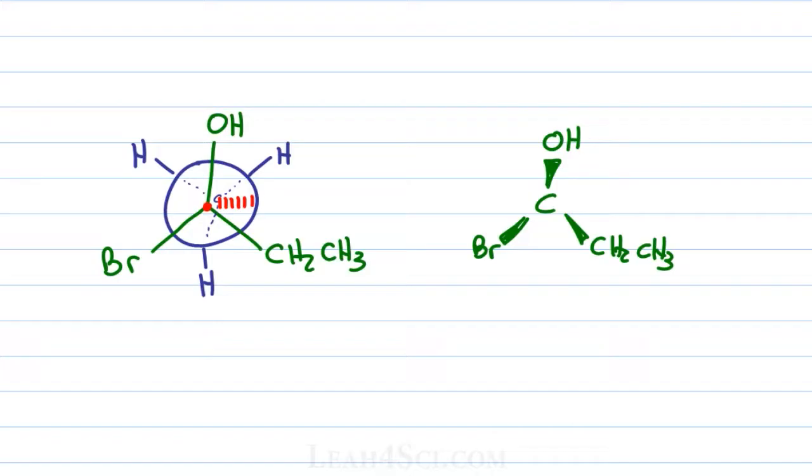So when you see this and you know priority number 4 in this case is in the back, just draw dashes to show that it's going back and put a 4 on it. Next, we'll prioritize the remaining groups: bromine 1, OH 2, ethyl 3. We have number 4 in the back, so all you have to do is cross out number 4, trace a path from 1 to 2 to 3, and we have R.